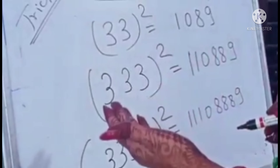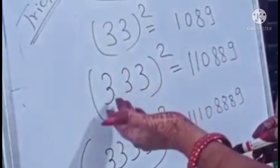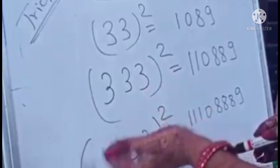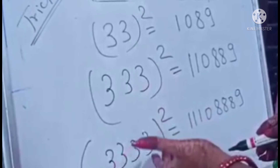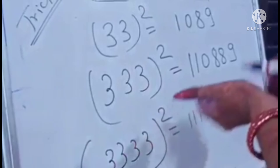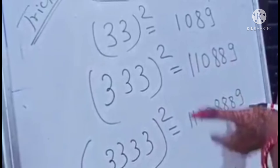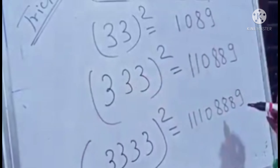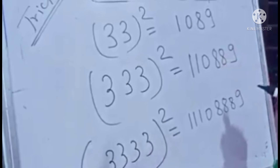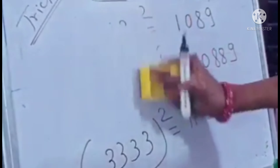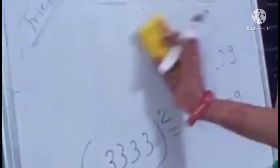Dividing each digit by 2: 2 ÷ 2 = 1, 4 ÷ 2 = 2, 6 ÷ 2 = 3, 8 ÷ 2 = 4, 8 ÷ 2 = 4. And now we put a 0 at the end. This will be our answer. So if we multiply 24688 by 5, we get the answer 123440. If you have calculated it, you can check this.